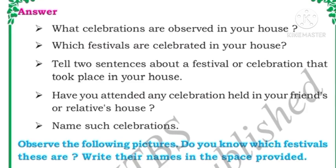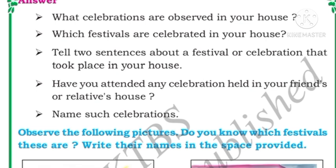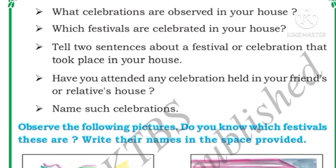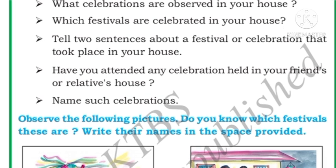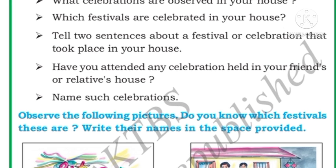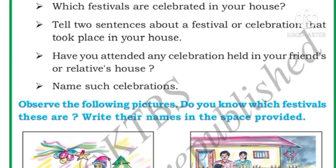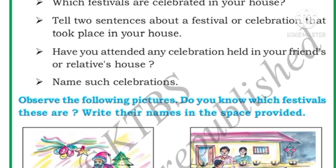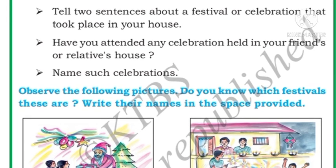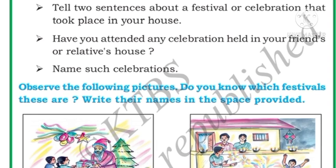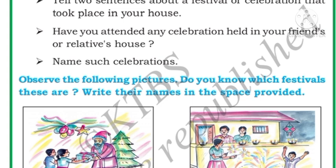Next, what celebrations are observed in your home? In our home we celebrate some special days, so you have to say which festivals are celebrated in your home. Children, in your home many different festivals are celebrated — Christmas, Diwali, Eid, and Pongal. These are all festivals which you celebrate at home. You have to write the name of the festival you celebrate. Now tell two sentences about a festival or celebration that took place in your home.